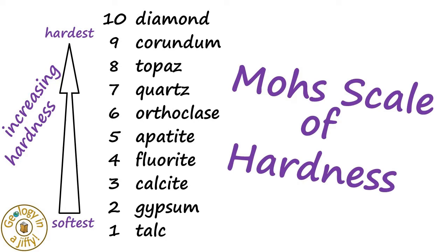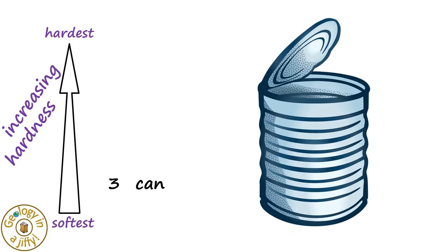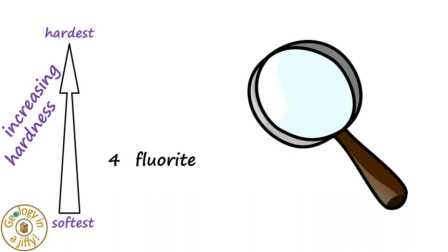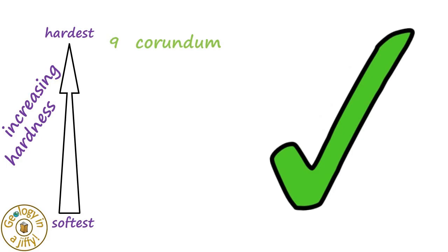We can remember these by the mnemonic: 'The geologist can find amazing ores quickly through correct data' — corresponding to talc, gypsum, calcite, fluorite, apatite, orthoclase, quartz, topaz, corundum, and diamond.